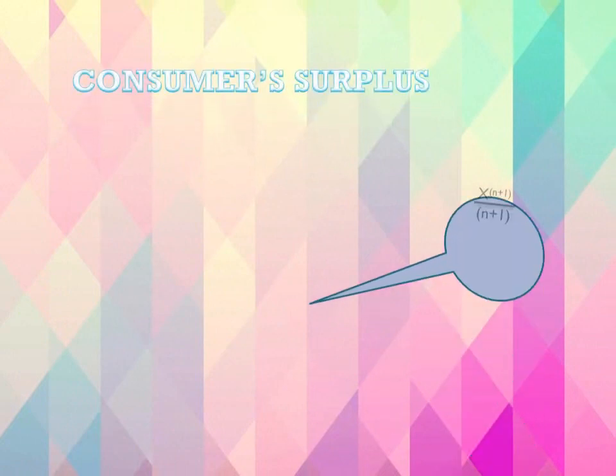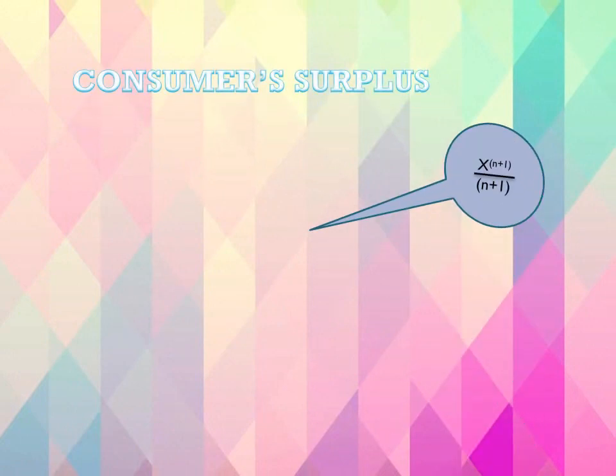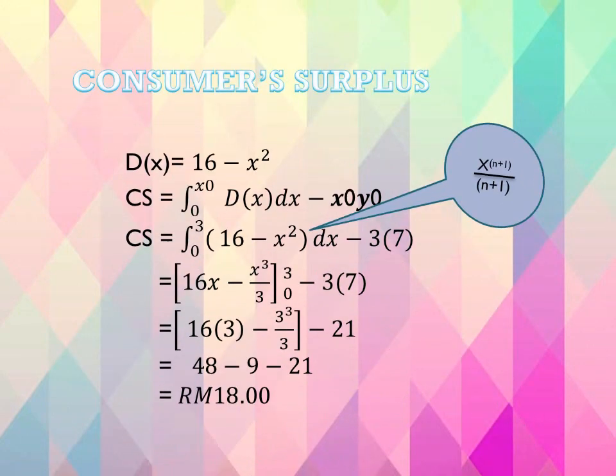For the consumer surplus value, first use the demand equation DX equals 16 minus X squared. Second, apply the CS formula. Substitute the values into the formula: CS equals the integral from 0 to 3 of (16 minus X squared) dx, minus 3 times 7.